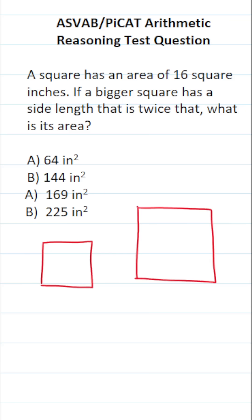Again, for the ASVAB and PyCat, you're not permitted to use a calculator or reference sheet. So you have to know some basic formulas from geometry, including how to find the area of a square from memory. Area of a square is going to be equal to its side length squared or s squared. That's the case for both of these squares.